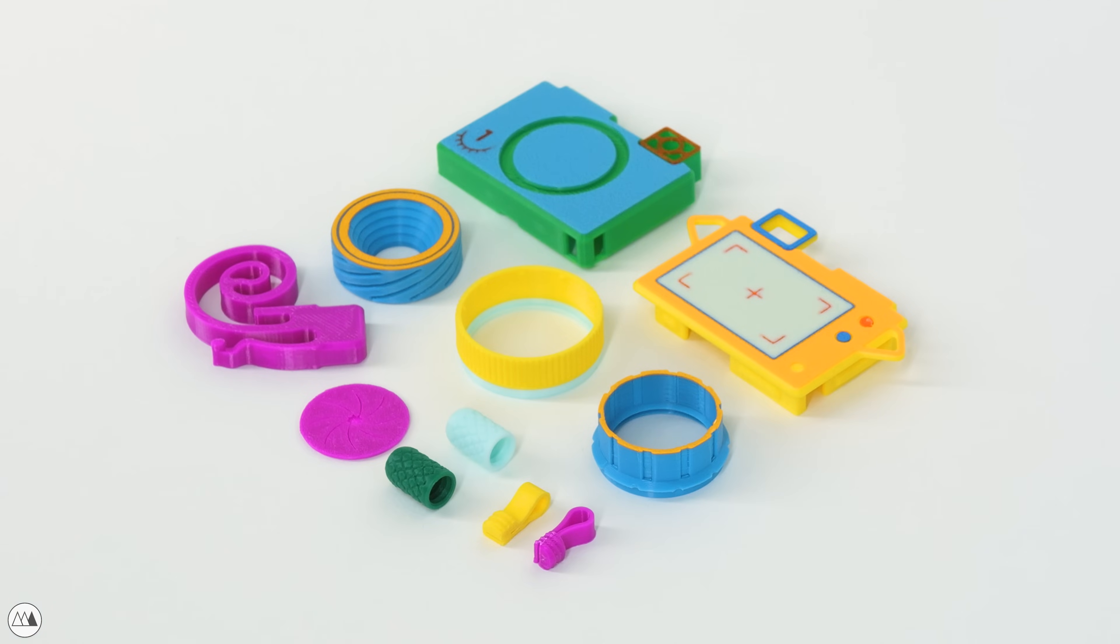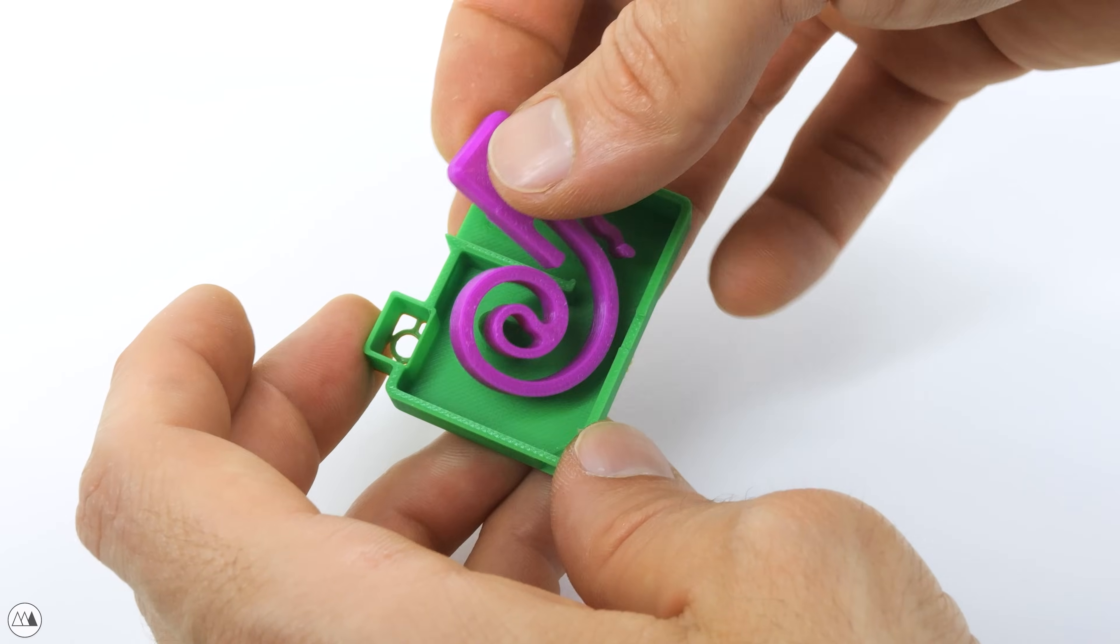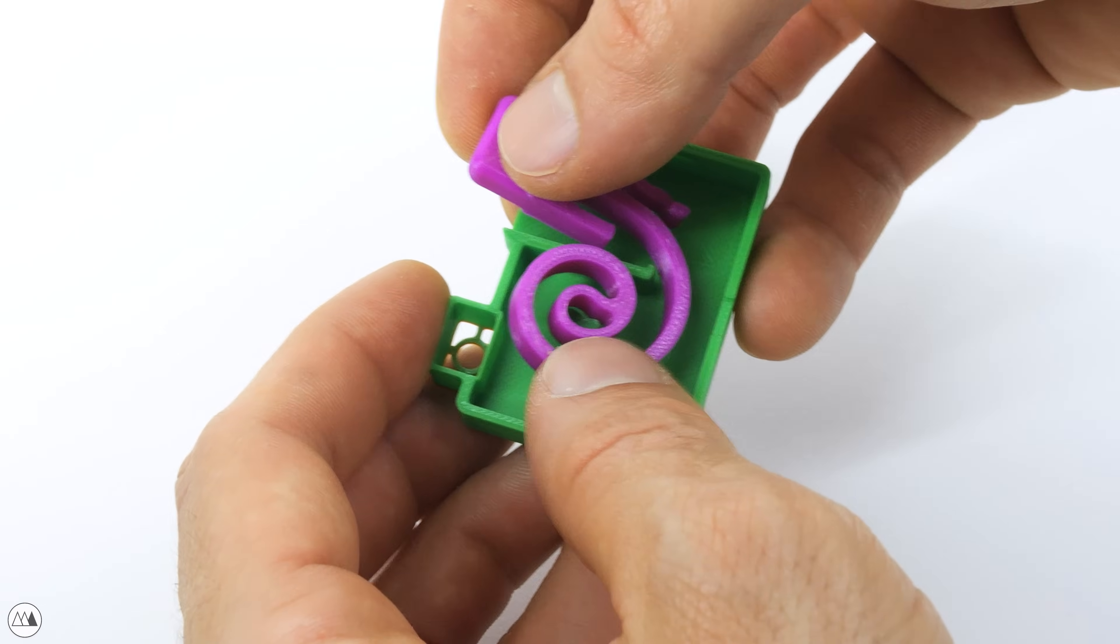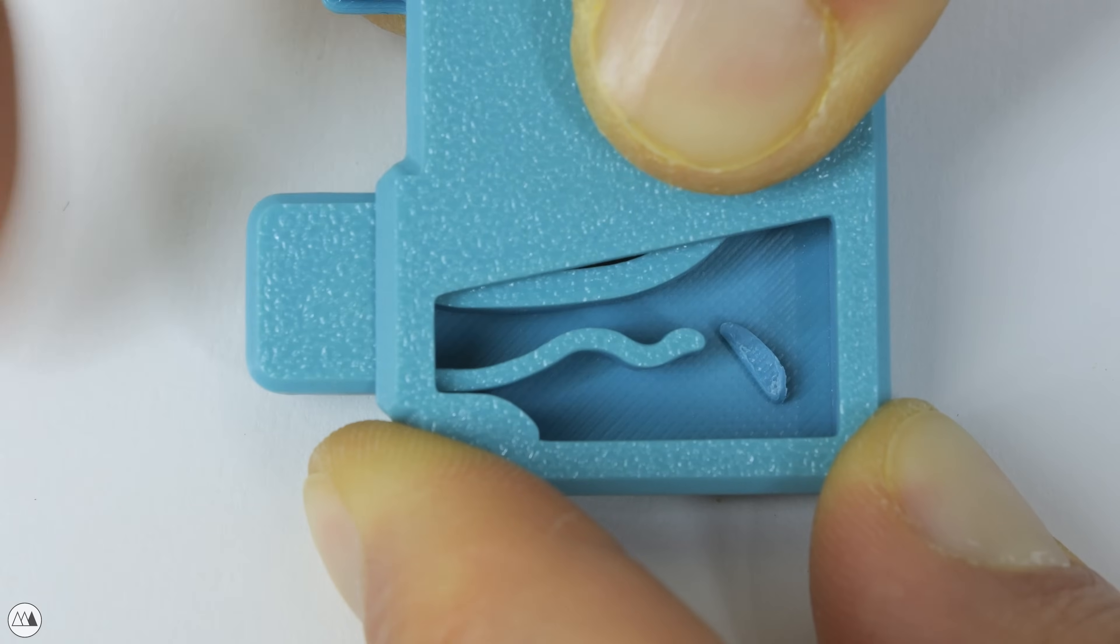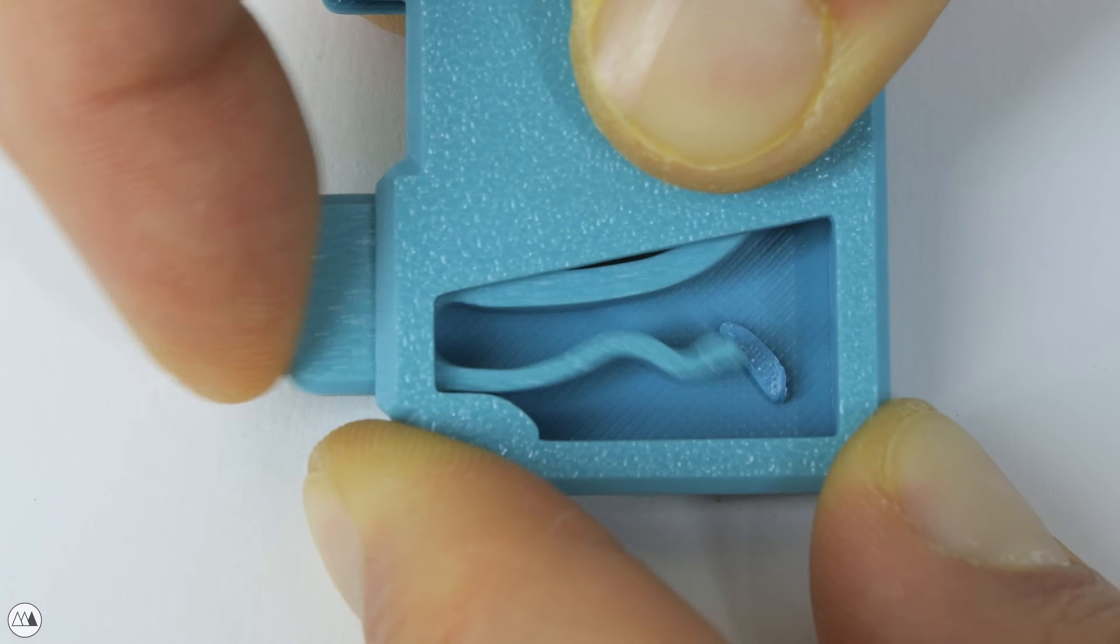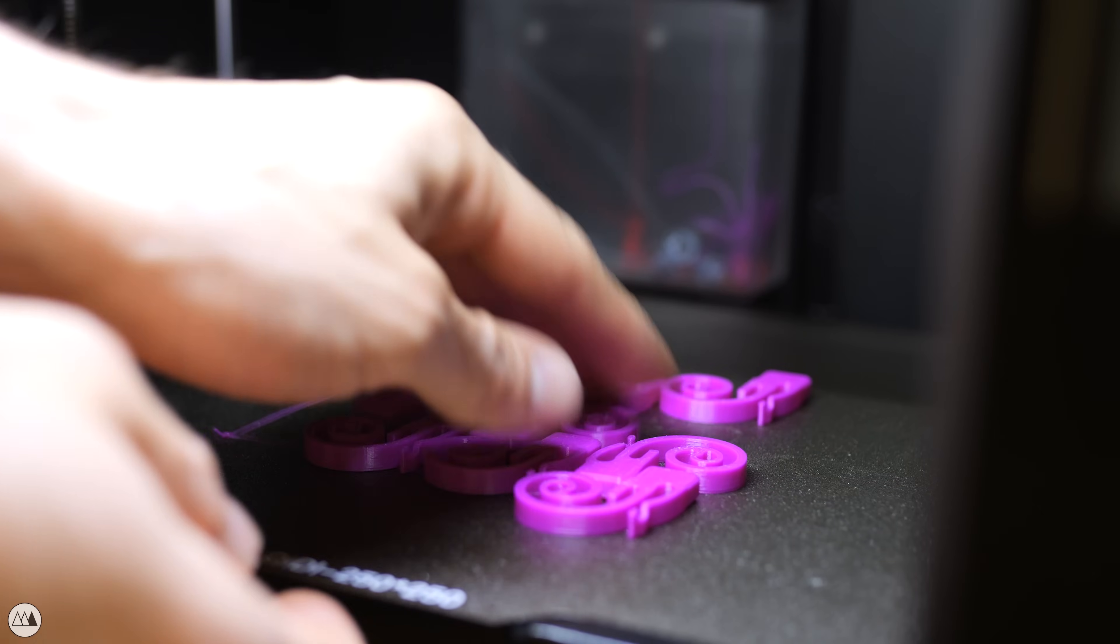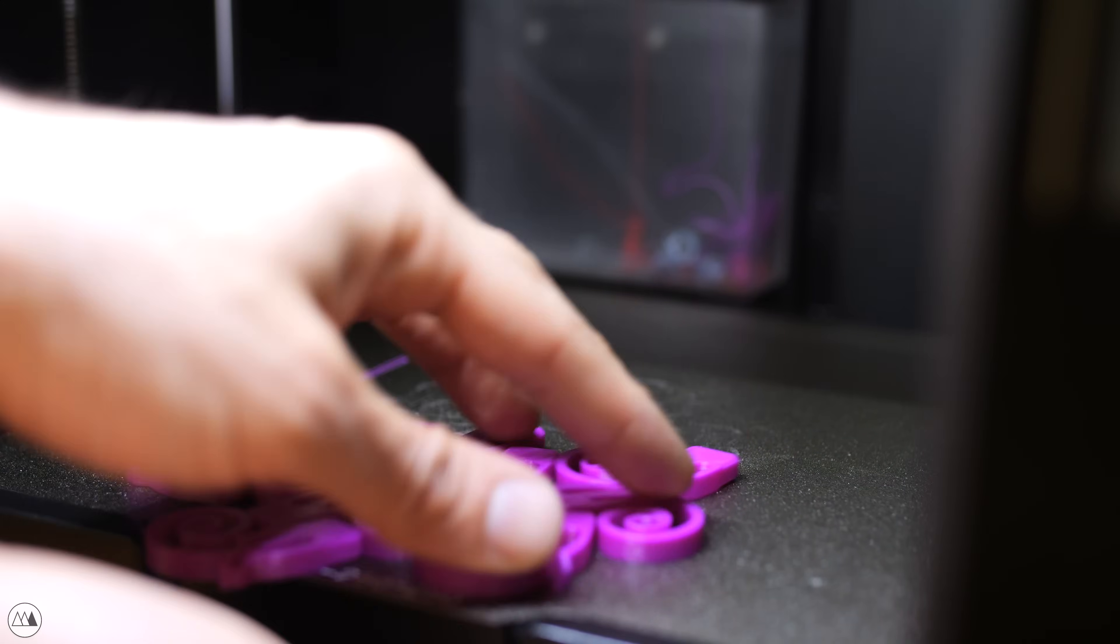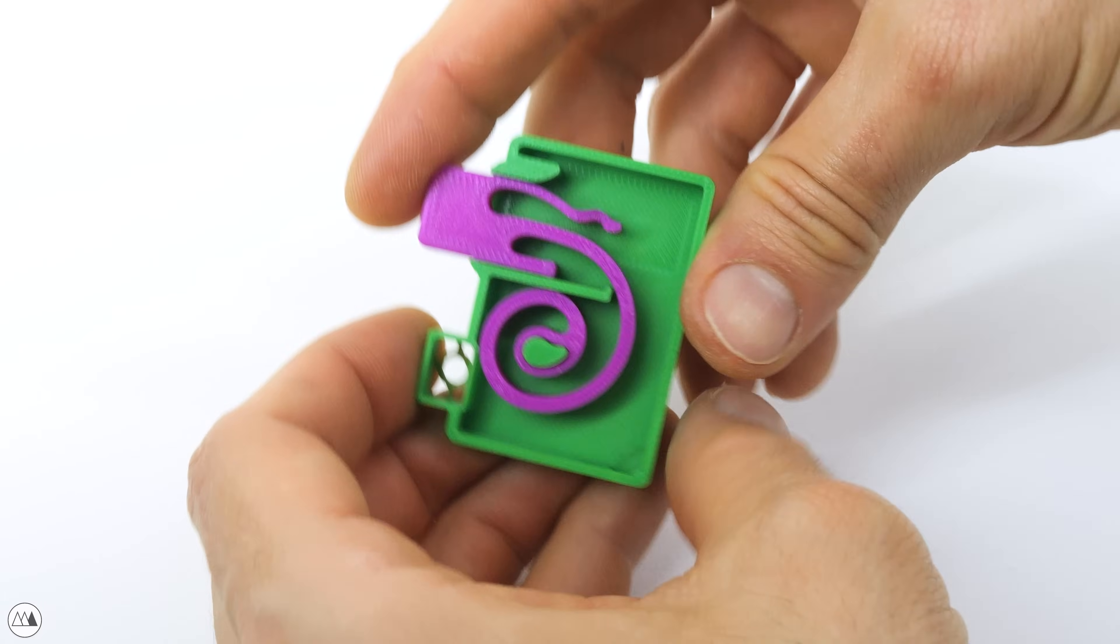We can start by installing the ever-so-important shutter mechanism. This spring was designed to be robust enough to work with PLA, but for a longer shutter life, you might opt for a more wear-resistant material like PETG or ABS. Also make sure that it's popped all the way flush to the back.